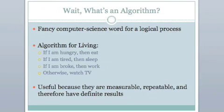Let's take a break here and just look at what an algorithm is. It's a fancy computer science word for a process or a logical process of things to do. For example, an algorithm for living: if you're hungry, eat; if you're tired, sleep; if you're broke, go do some work; otherwise, watch TV. It's a basic description of how to go about something. But they're useful because they are measurable, repeatable, and we can really examine their results.